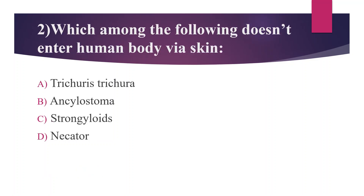Second question: Which among the following does not enter the human body via skin? Option A. Trichuris trichura, option B. Ancylostoma, option C. Strongyloides, option D. Necator. The answer is option A, Trichuris trichura. The infection is known as trichinellosis. People get it by eating raw or undercooked meat from an animal infected with Trichinella.